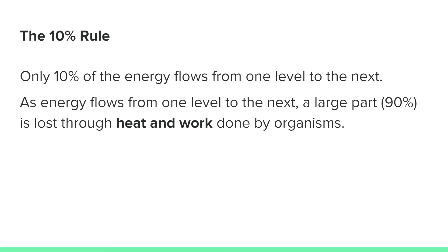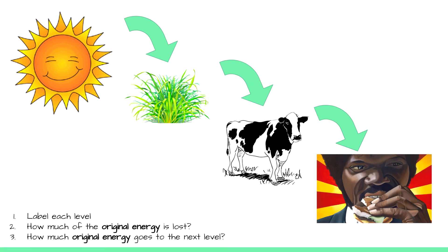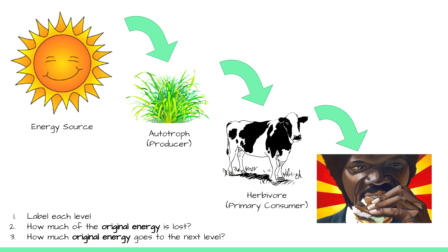Only 10% of energy flows from one level to the next. As energy flows from one level to the next in the direction of the arrow, a large part — 90% — is lost through heat and work done by organisms. Let's take this food chain here. The sun is the primary energy source. The grass is the autotroph or producer. The cow is an herbivore, so it is a primary consumer.